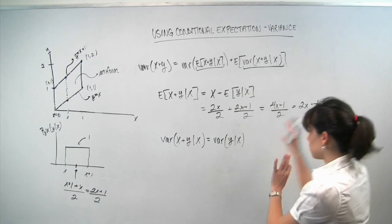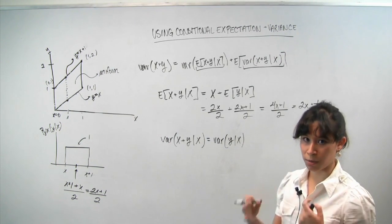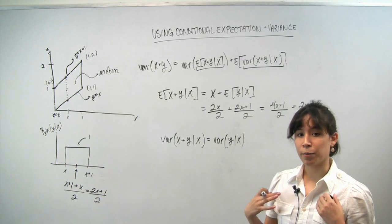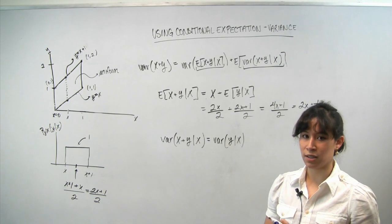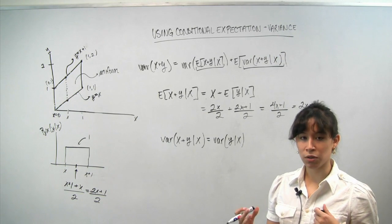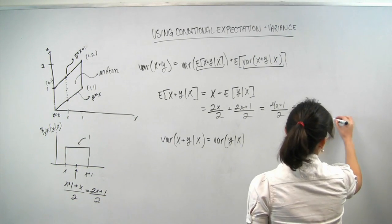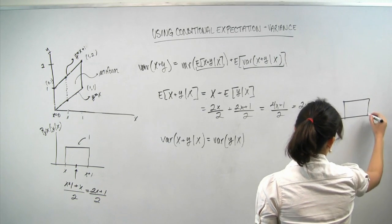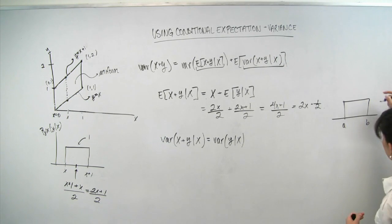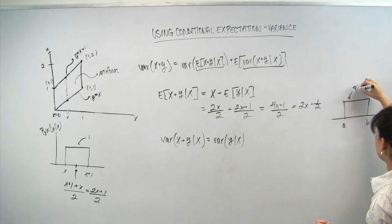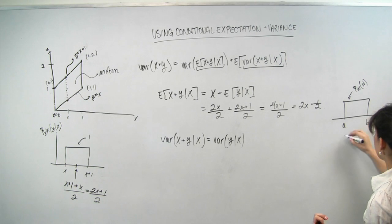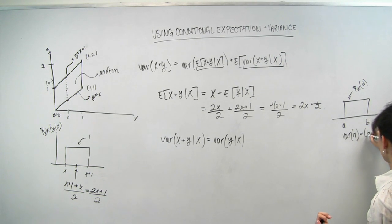So we're going to take a quick tangent over here, and I'm just going to remind you guys that we have a formula for computing the variance of a random variable when it's uniformly distributed between two endpoints. So say we have a random variable whose PDF looks something like this. Let's call it, let's say, w, this is p w, w.